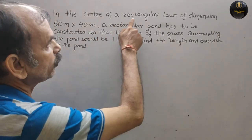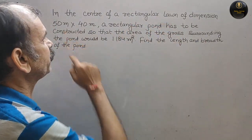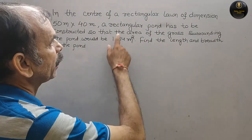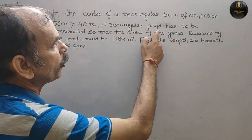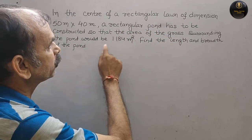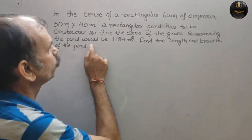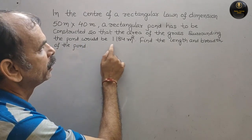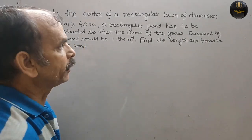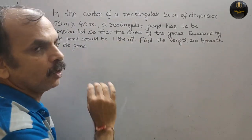In the center of a rectangular lawn of dimension 50m x 40m, a rectangular pond has to be constructed so that the area of the grass surrounding the pond would be 1184 m². Find the length and breadth of the pond.